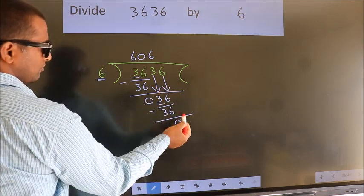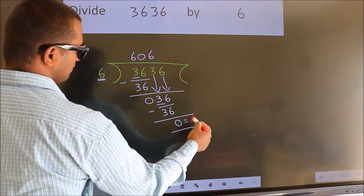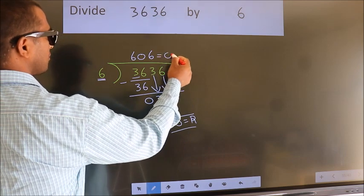No more numbers to bring it down. So we stop here. This is our remainder. This is our quotient.